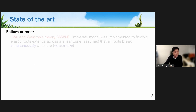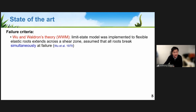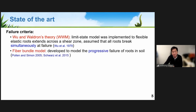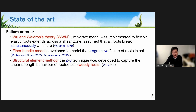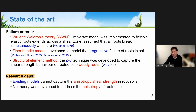Regarding failure criteria, several models capture the root reinforcement effect. The well-known Wu and Waldron theory assumes all roots break simultaneously during direct shearing. The fiber bundle model improves this by allowing progressive failure rather than simultaneous failure. Finite element approaches using PY techniques can model root-soil interaction for slope stabilization. However, none of these models can capture the potential anisotropy of rooted soil due to differing orientations of the major principal stress and root orientation, and no theory has been developed to address this anisotropy issue.